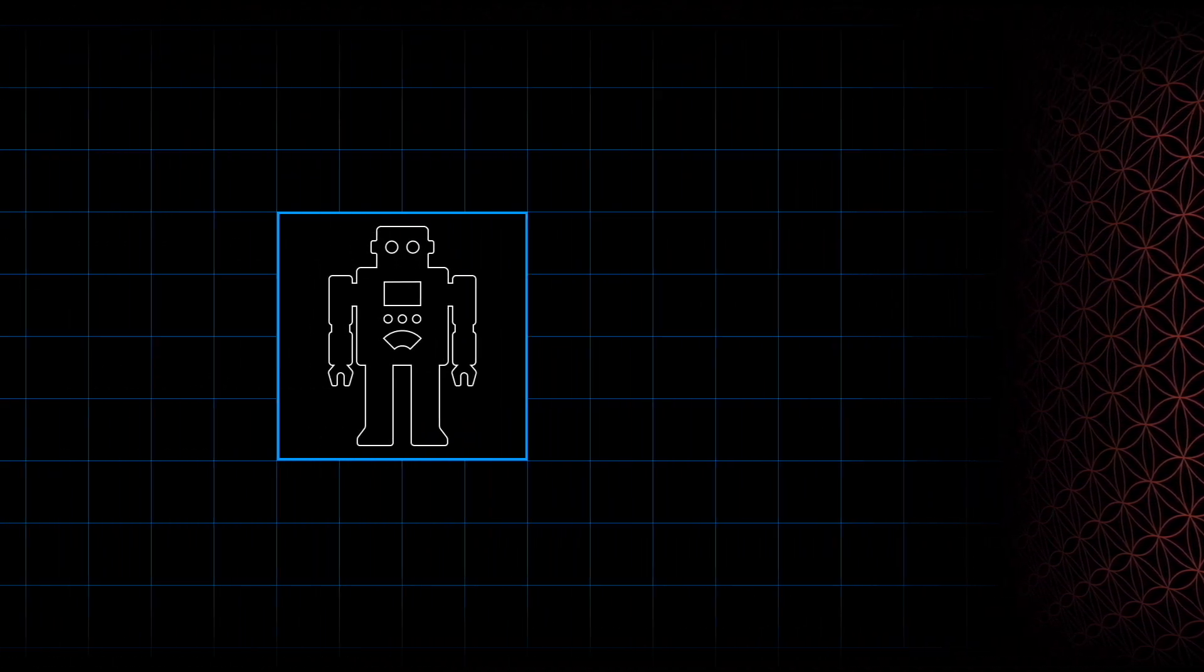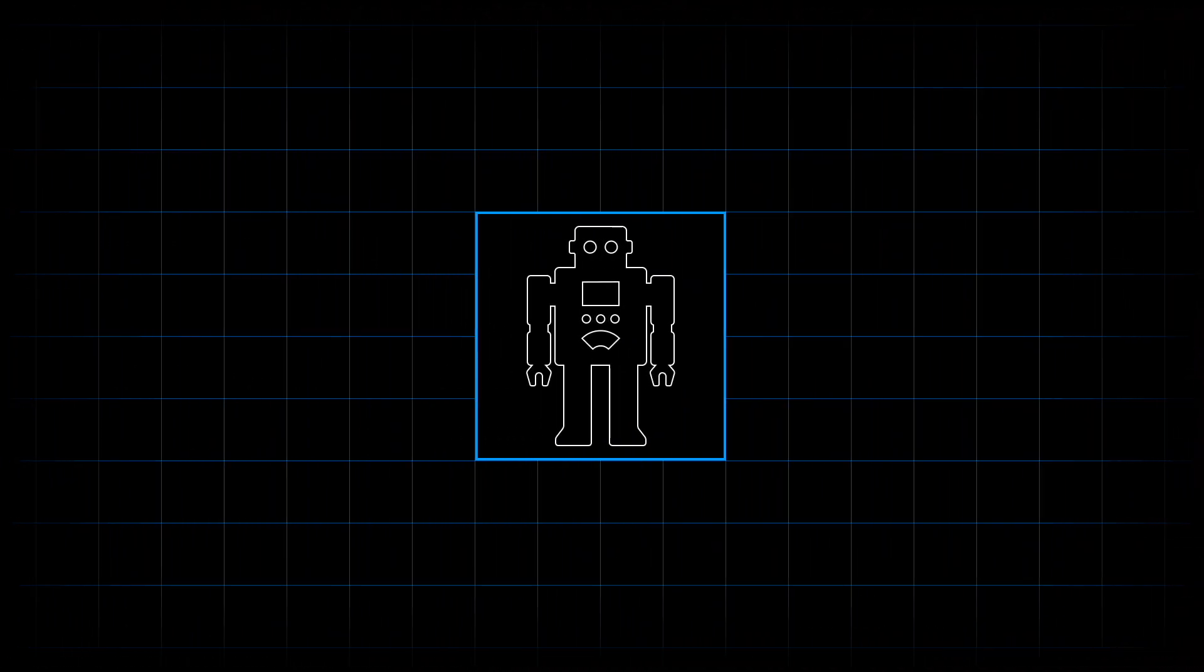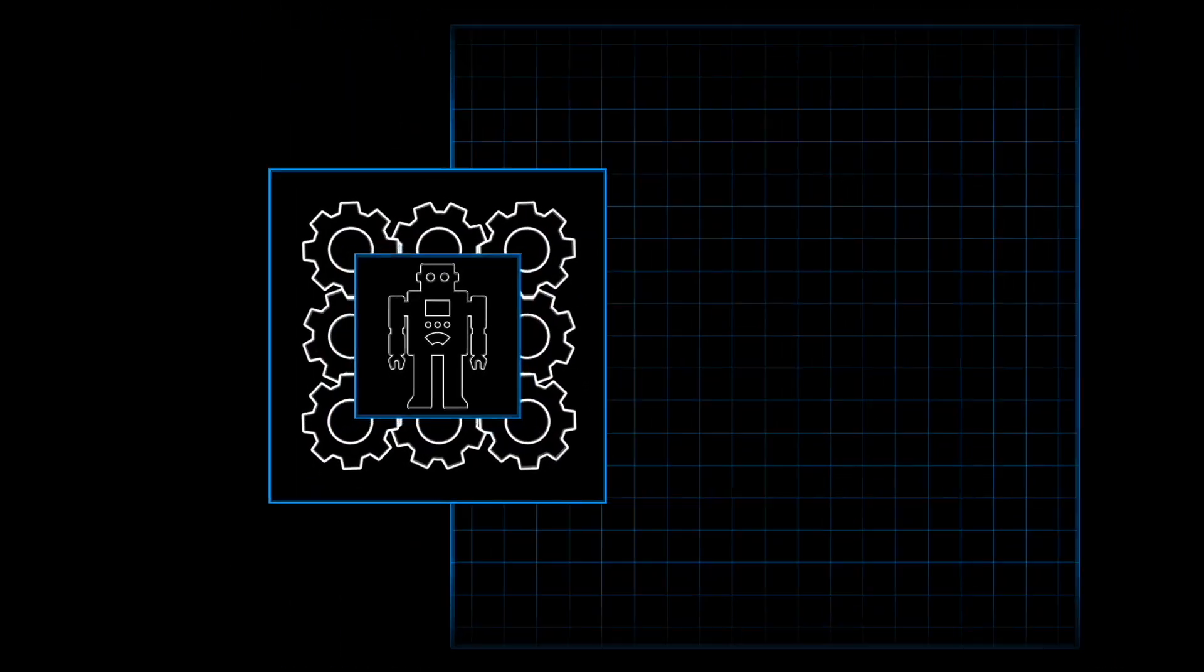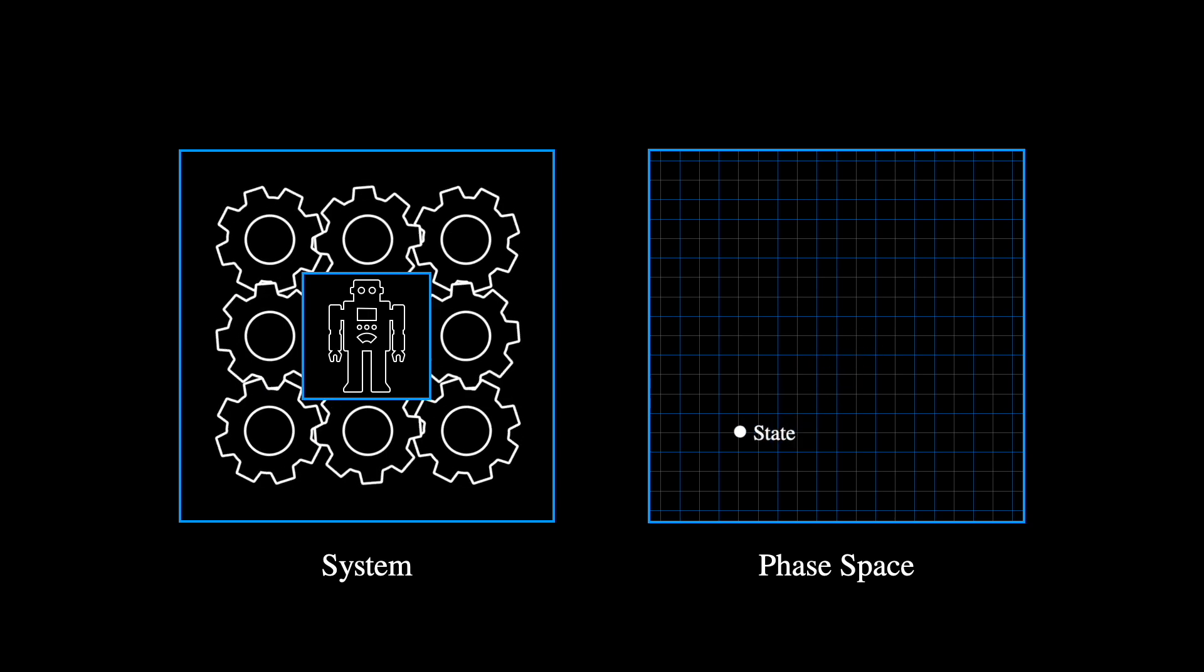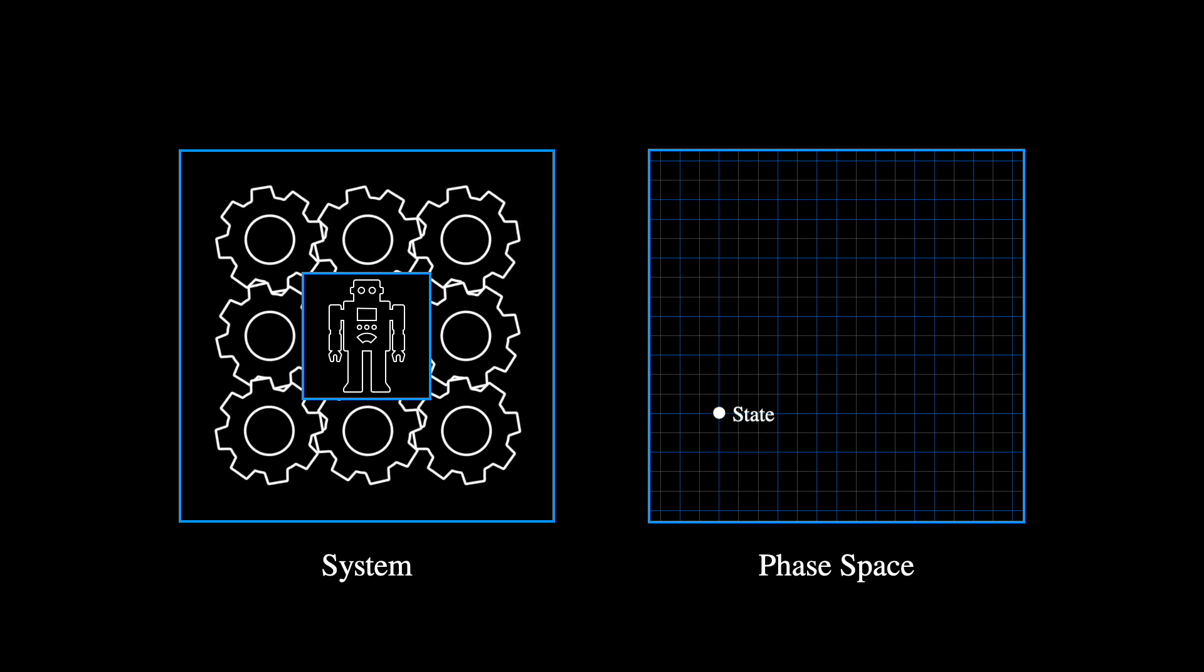Another helpful lens through which we can differentiate these two types of systems is the concept of the phase space. A phase space is a mathematical space that has as many dimensions as the system it is describing has effective degrees of freedom. Any point in the phase space corresponds to a unique state of the system.